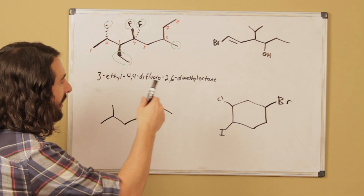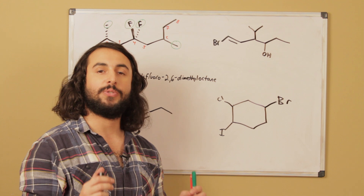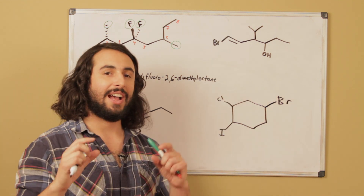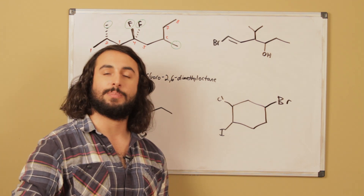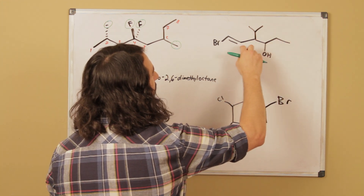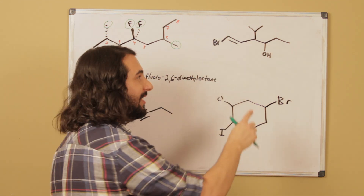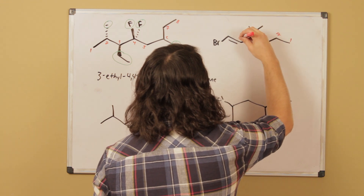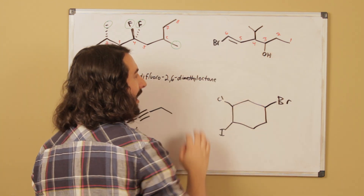Then we go directly into the parent molecule name with no space — octane. So the full name is 3-ethyl-4,4-difluoro-2,6-dimethyloctane. Now for this second compound, we have two functional groups that take greater priority over alkyl and halogen in terms of numbering. The hydroxyl group has priority over alkyne, which has priority over alkene, which has priority over alkyl and halogen substituents. So we know the chain is six carbons, and we number right to left so that the hydroxyl occurs sooner.